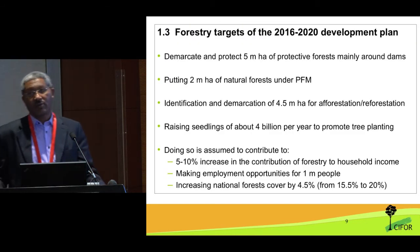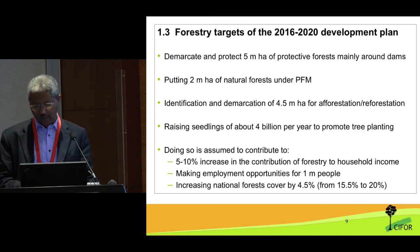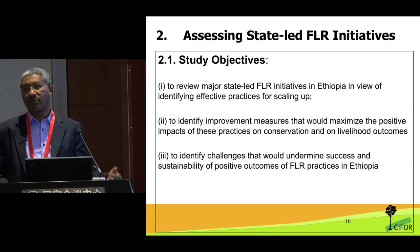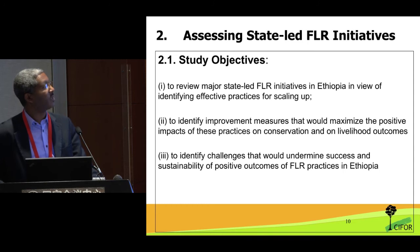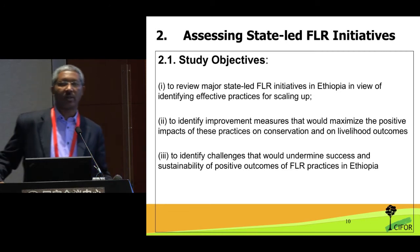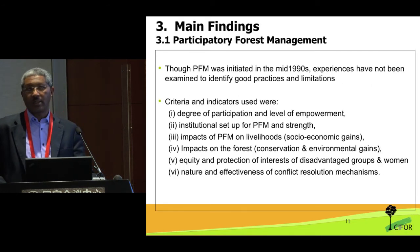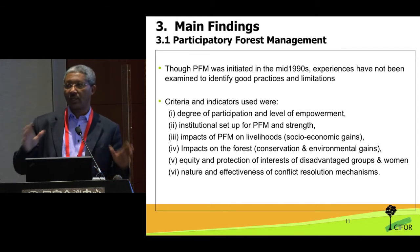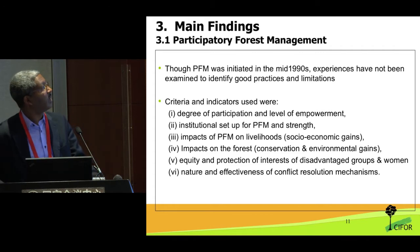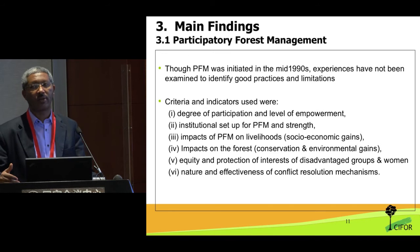There is an ambitious plan for the next five years, largely to be achieved through landscape restoration efforts engaging communities and all other actors. Our study focused on looking at what experiences we have, what can we learn, and what can we suggest to improve effectiveness and efficiency. We also wanted to identify improvement measures to enhance both the conservation and livelihood outcomes of these restoration objectives.